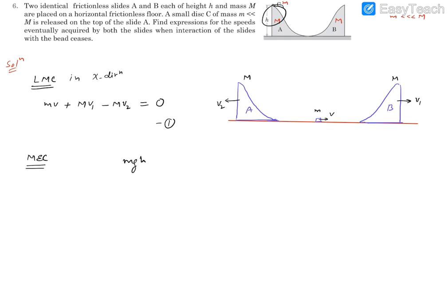It will say initially there was mgh energy because it was at height h. Finally it has gone to the downside. There is no change in the center of mass location of A and B, and this gravitational potential energy has led to the final kinetic energy. So final kinetic energy is going to be half m v1 square plus half m v2 square plus half m v square.